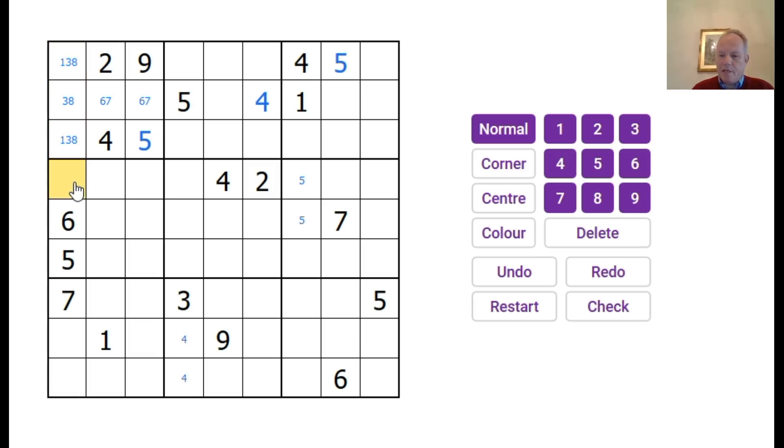That must be eight and three because of this six and seven here. Okay, six, five, seven. That must be a nine now, which is useful. And that's just by, that's the only possible digit left for that cell given that one, three, and eight are locked into those three boxes.